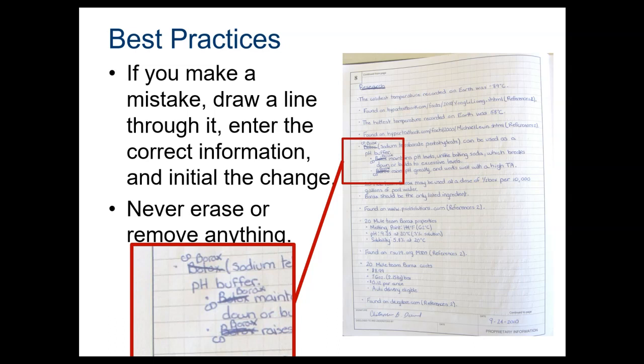In this example, this person misspelled a couple words and since they wrote in pen, they were able to cross it out and correct the mistake. This is definitely okay. It's okay to see the mistakes. That's how we learn and that's how we see the thought processes that occurred in your design process.